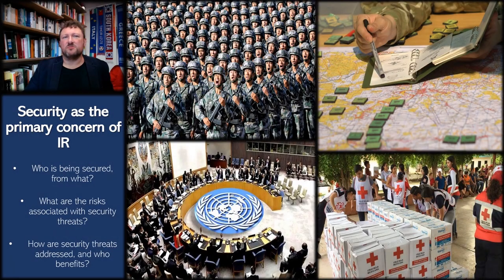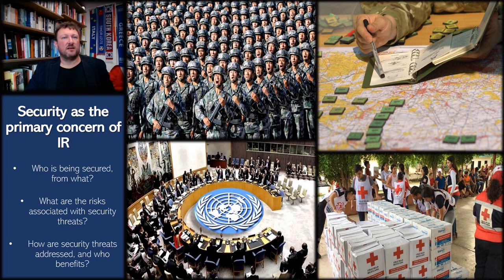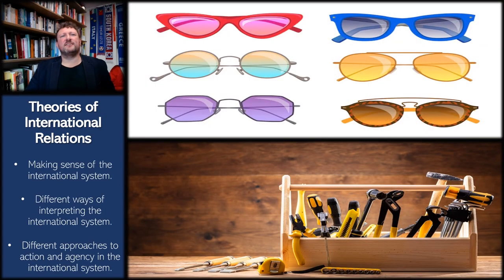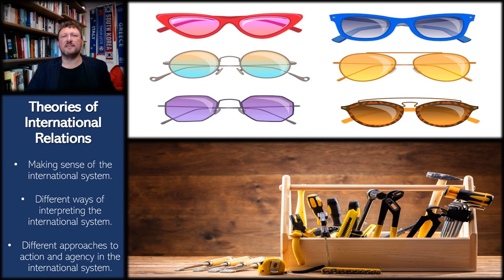Security is also a foundational concern of international relations. But what does security mean in the context of IR? What's being secured and from whom? What are the risks associated with those threats? How are security threats addressed, and who benefits from security threats being addressed in the specific ways that they are? All of these are very important questions when looking at any international security issue. We'll show you different ways in which international security is conceptualized and achieved, and alternatives to conventional approaches that focus exclusively on national security — and we do this through the different lenses of IR theories.